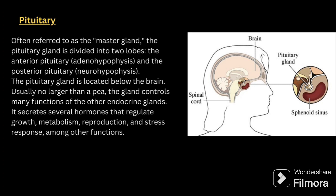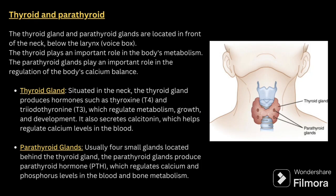The third part is the pituitary gland, often referred to as the master gland. The pituitary gland is divided into two lobes: the anterior pituitary, that is adenohypophysis, and the posterior pituitary, that is neurohypophysis. The pituitary gland is located below the brain, usually no larger than a pea. The gland controls many functions of the endocrine glands and secretes several hormones that regulate growth, metabolism, reproduction and stress response. In the brain image, the location of the pituitary gland is clearly marked.